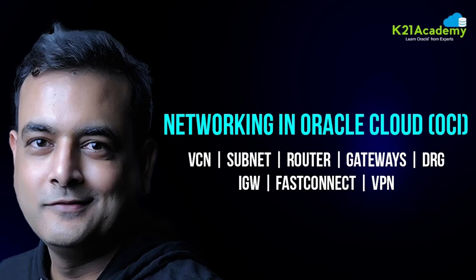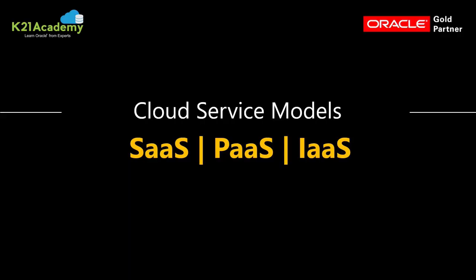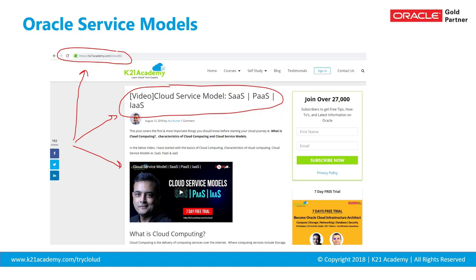Before that, let me give you some context. Cloud is typically divided into three service models: software as a service, platform as a service, and infrastructure as a service. Everything today we are going to discuss is from the third part — infrastructure as a service. If you are new, I did a video you can watch at k2ninacademy.com/cloud02, which covers this service model.